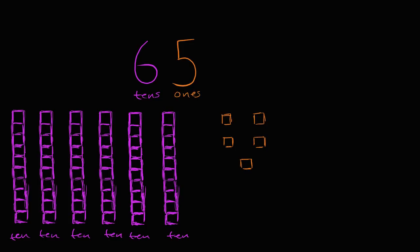So now let's do something interesting. Well actually, let me just first write that down again, just to emphasize it. So we can write down that 65, 65 is equal to six tens, six tens plus five ones, plus five ones.